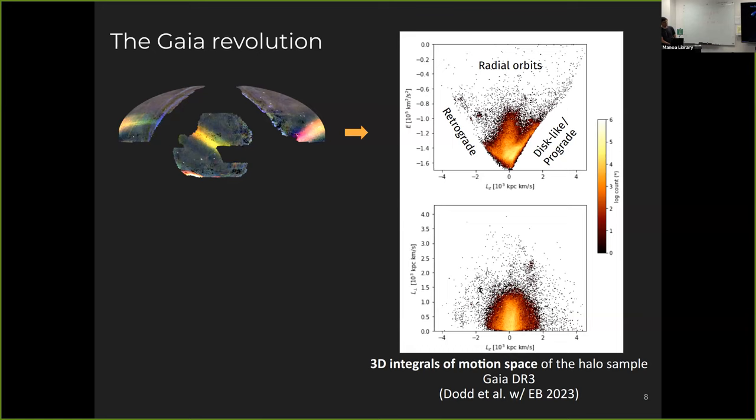And this big one in the middle here, it is one of the biggest accretion events that was known in the Milky Way, which got named Gaia Sausage Enceladus.